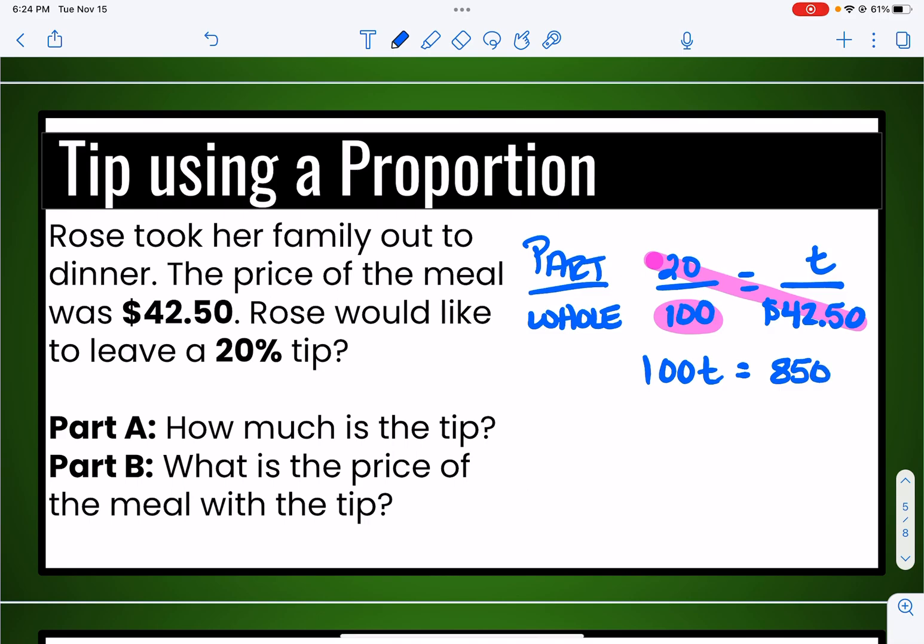20 times 42.50 would be 850. And then when I divide 850 by the 100, the amount of the tip would be $8.50. So a pretty decent tip. So that would be the answer to part A. How much is the tip? It's $8.50.